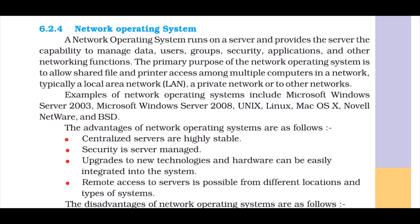The primary purpose of the network operating system is to allow shared file and printer access among multiple computers in a network, typically a LAN — local area network — which is connected locally, such as a private school or private building on one geographical location. Examples of network operating systems include Windows Server 2003, Windows Server 2008, Unix, Linux, Mac OS X, Novell Netware and BSD. These operating systems were designed specifically for networks to control and share files.